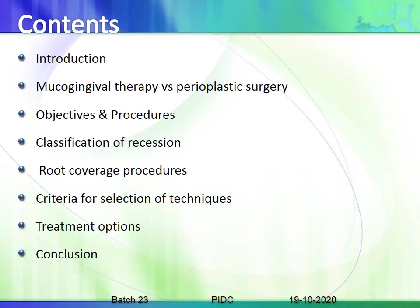The contents of this class include: introduction, mucogingival therapy and periodontal plastic surgery, the differences, objectives and procedures, classification of recession, the different root coverage procedures, criteria for selection of techniques, treatment options, and we'll finish with a conclusion.